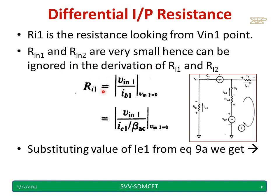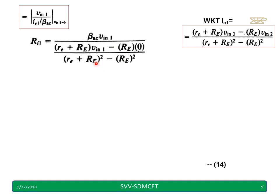The derivation: ri1 equal to vin1 divided by ib1, and substituting the value of i1 from equation number 9a, we are going to get this. Again you can refer i1 equals this, and this is the previous equation ri1. I simply substituted this and I got this equation.